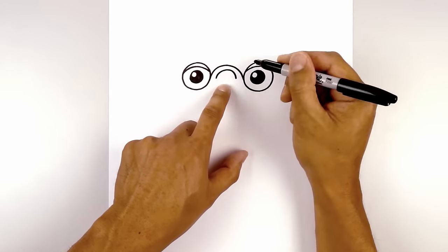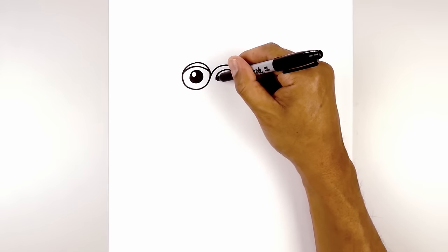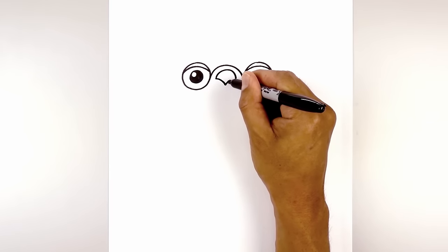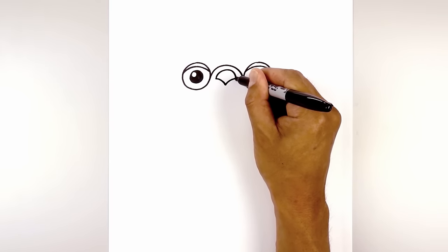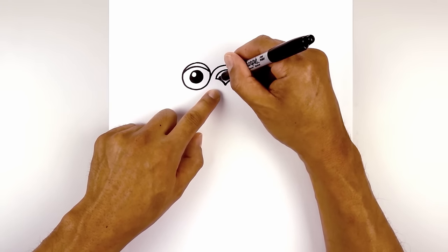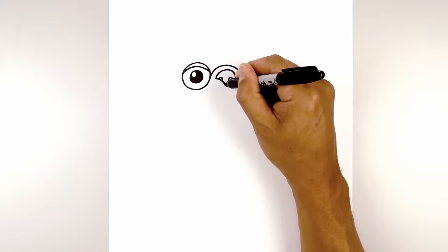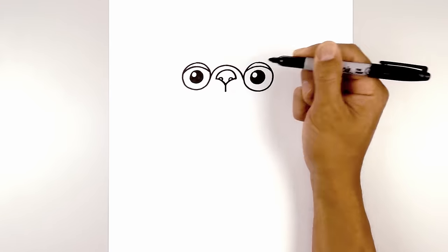From here we're going to curve in and then down towards the center point. On the left we'll curve in and then down, then curve that up and out towards the right. Now draw a small half circle on the left side for the nostril, do the same thing on the right. From that bottom point draw a straight line coming down towards the top of the mouth.